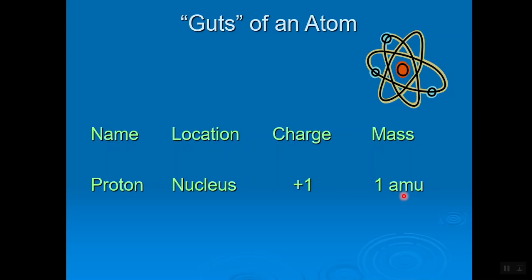An AMU is also referred to as a Dalton. One AMU and one Dalton are the exact same thing. John Dalton was actually a high school chemistry teacher who lived in the 1800s and he was the first person to come up with a real good model for what an atom might look like.